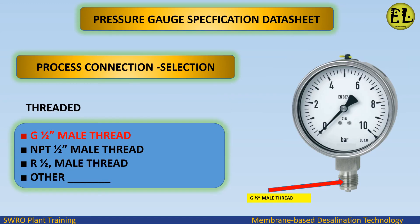Process connection selection: threaded. Thread options include G½ male thread, NPT ½ male thread, R½ male thread, and other. We select G½ male thread for this application.